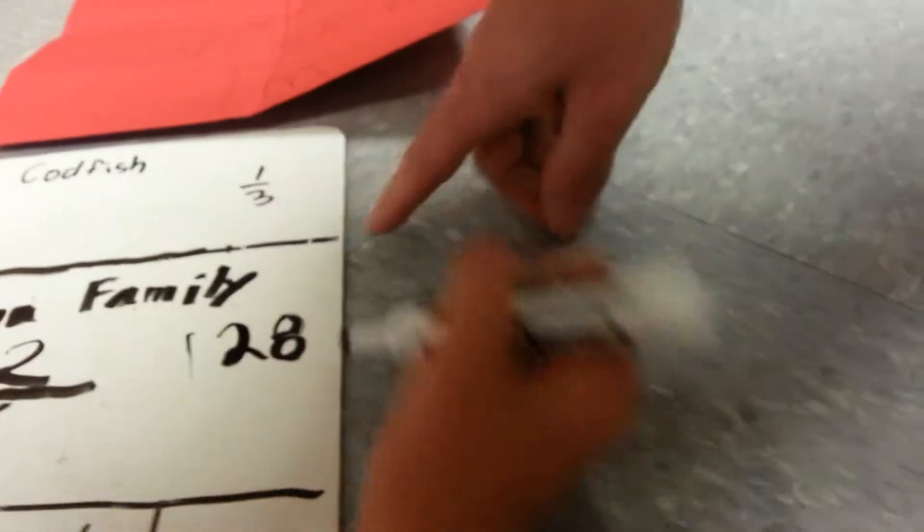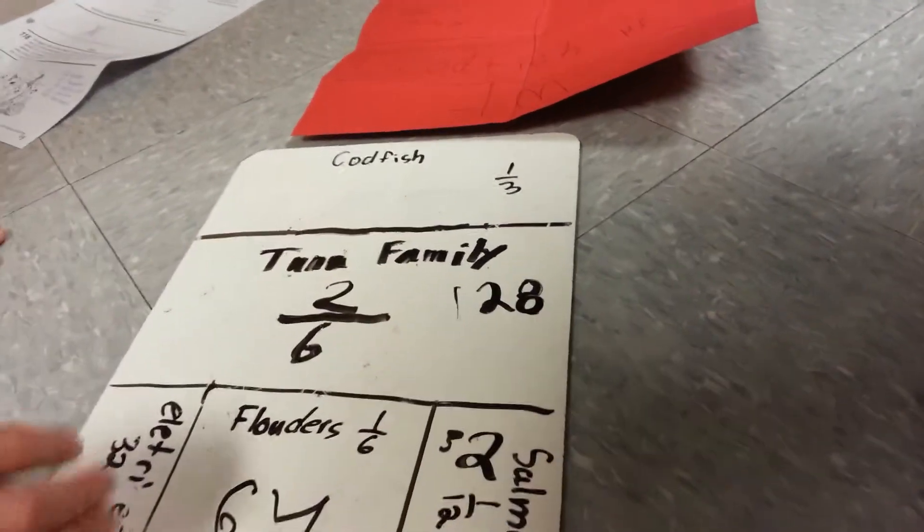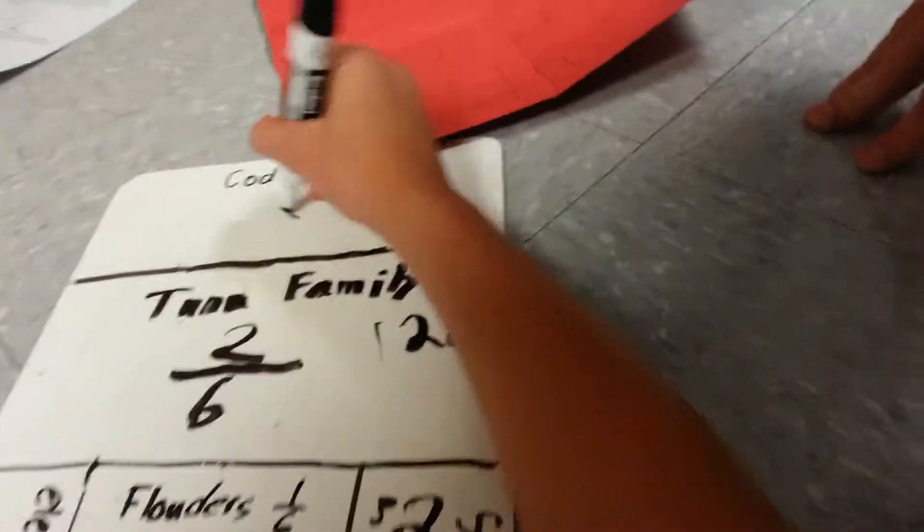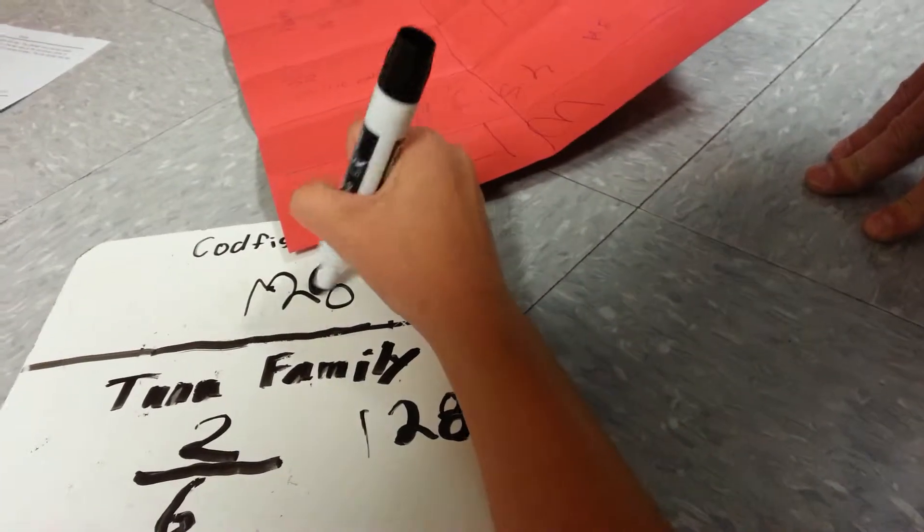And why is this one-twenty-eight? Because that takes up four chunks. And that's sixty-four. Is this twice as big as that? Yes. Then that's the exact same number, so that's one-sixty-eight. One-twenty-eight, right? Yeah, one-twenty-eight.